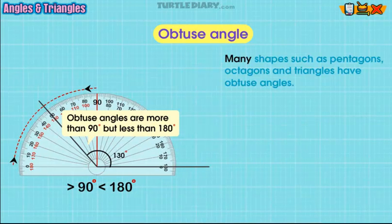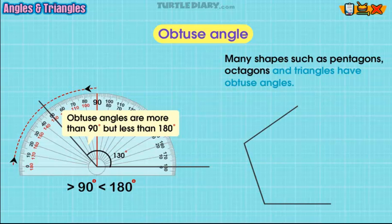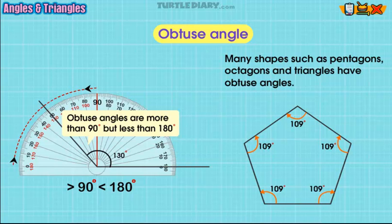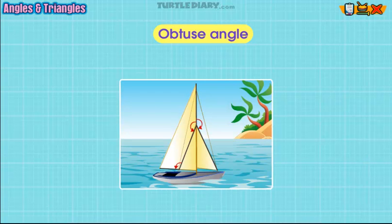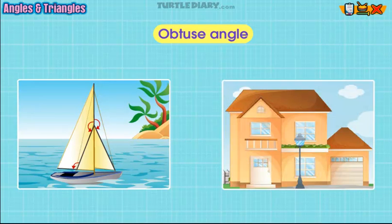Many shapes such as pentagons, octagons, and triangles have obtuse angles. Here are some examples: you are walking by the water and you see a beautiful sailboat. You notice that the sails have obtuse angles. You are playing outside with friends when you look up and notice that the top of your house is an obtuse angle.